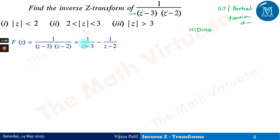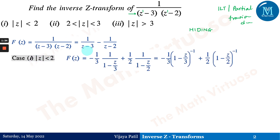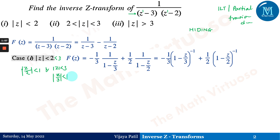Now in case 1, mod of Z is less than 2. We can check that mod of Z by 2 is less than 1. Since 2 is less than 3, mod of Z is also less than 3, meaning mod of Z by 3 is less than 1. We have to first understand the ROC or region of convergence and proceed accordingly.